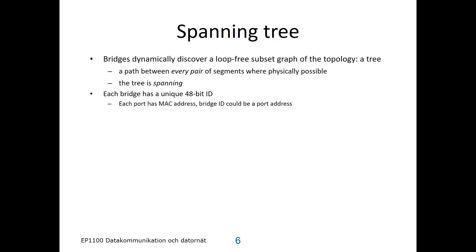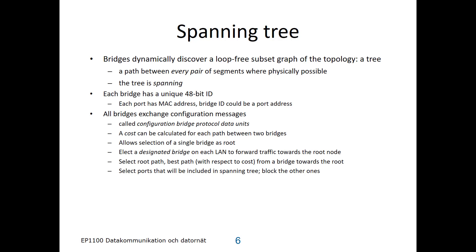The protocol provides full connectivity of the physical topology but without any loops. It uses the fact that all bridges have unique IDs — these are MAC addresses of 48 bits, which could be a port address on the bridge. The bridges exchange configuration messages called configuration bridge protocol data units. There is a cost calculated for each path between two bridges; typically we count the number of hops as the cost, where one hop corresponds to passing one bridge. The protocol selects one bridge as the root node in the tree, selects a designated bridge on each LAN to forward traffic toward the root node, selects a root path with the best cost from the bridge toward the root, and importantly selects the ports to be included in the spanning tree. All other ports will be blocked and will not forward any traffic.